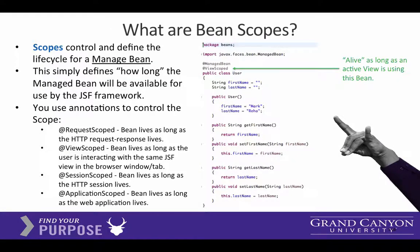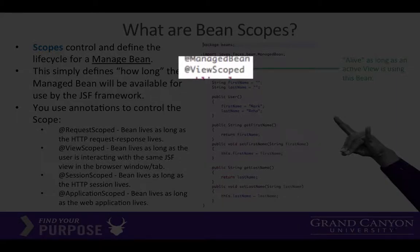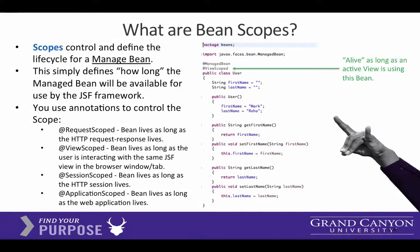Another decorator not included in our code is called ViewScoped. ViewScoped is by default what a managed bean gets, and it determines how long the data is valid — how long it's connected to the page. In this case, it's connected just to the one browser window. Later on, we're going to create a demonstration application that will show you the difference between all these scopes.